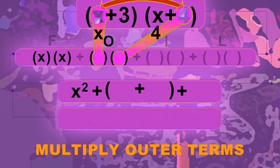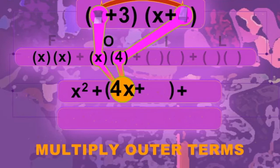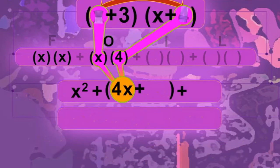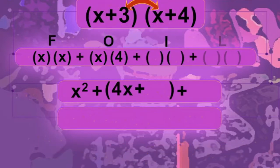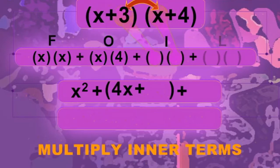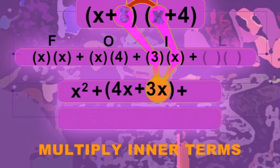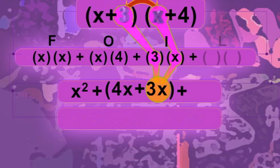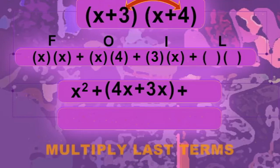Outside, multiply the outer two terms: X times 4 equals 4X. Inside, multiply the inner two terms: X times 3 equals 3X.